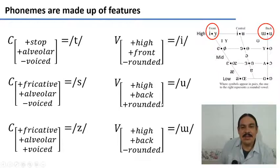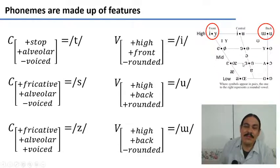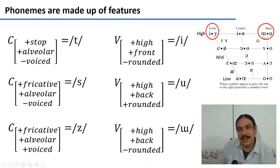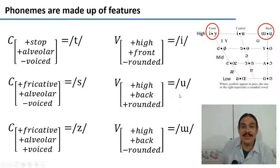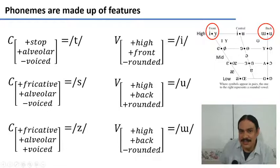And if we switched this feature from plus to minus, we would have a vowel that is [+high], [+back], and [−rounded]. If the language had this phoneme, it would be an unrounded high back vowel. Notice again how the difference between these two is that one is [+rounded] and one is [−rounded].